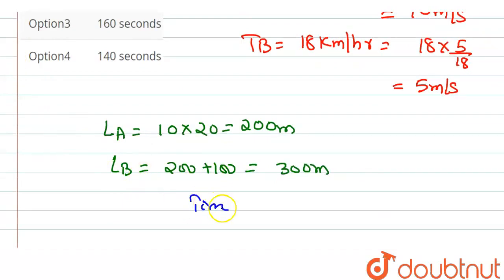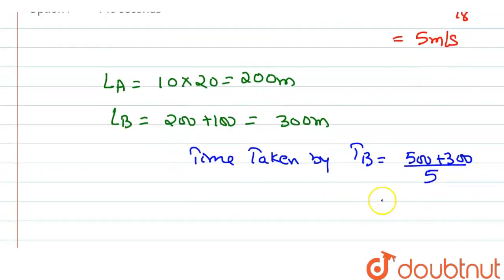Time taken by train B equals to 500 platform plus 300 divided by speed. This value is 160 seconds.